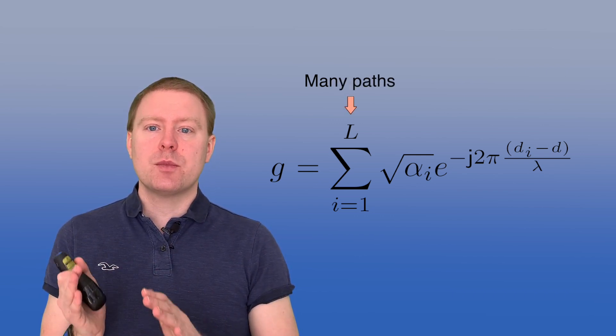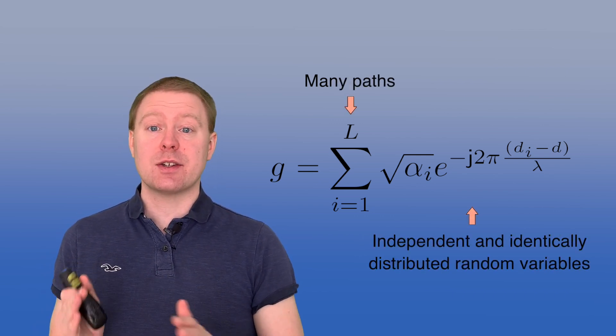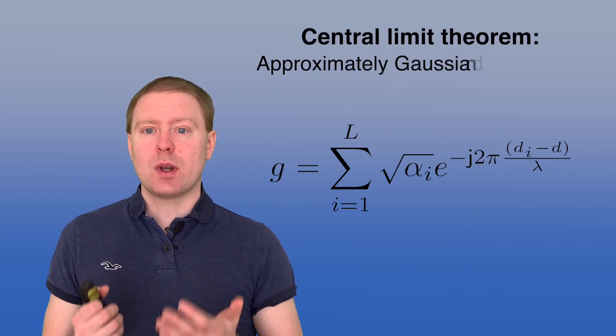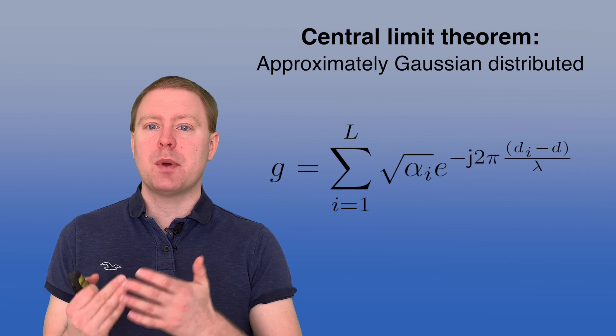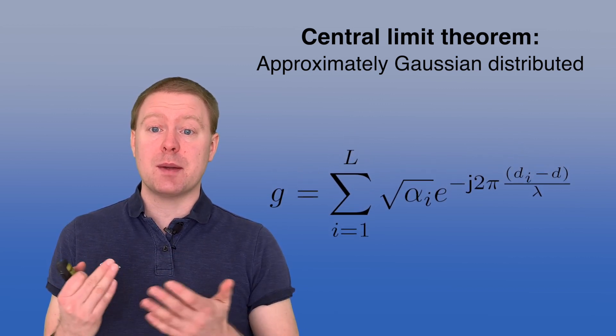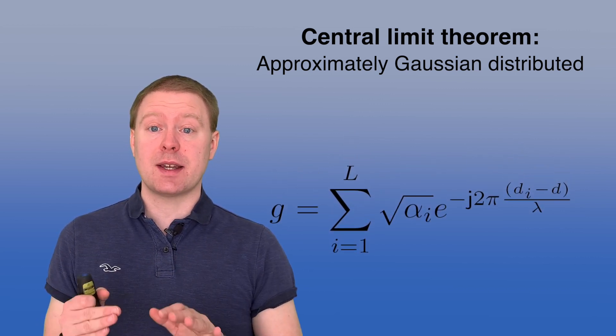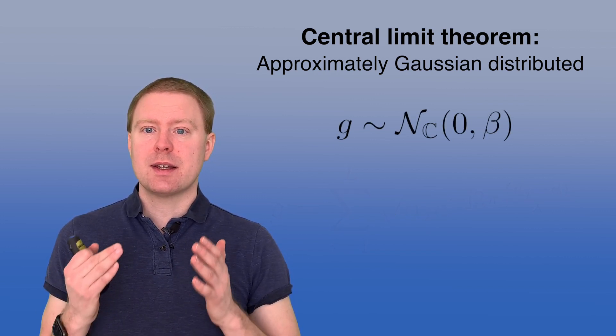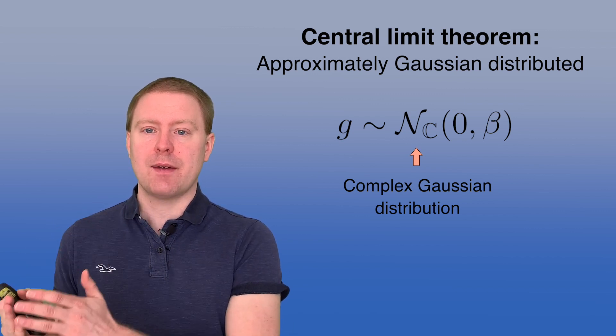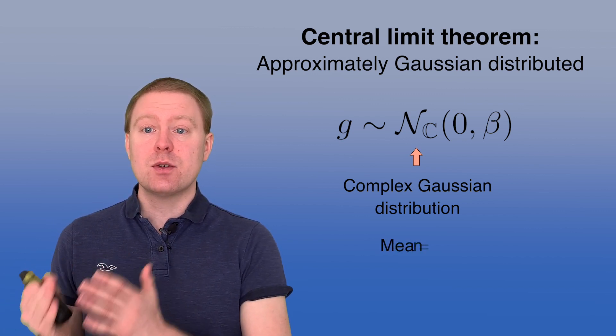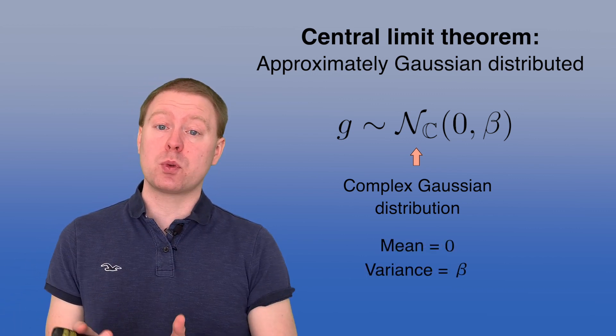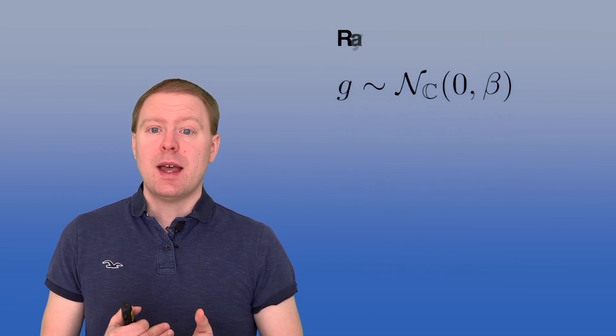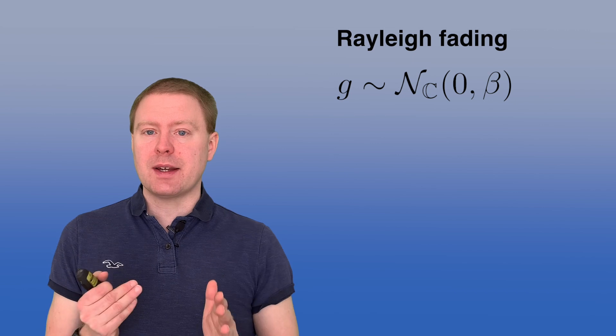And all of them, you can view them as independent and identically distributed from some kind of distribution. And then the central limit theorem says that when you add up a lot of random variables that are independent, then you get something that is roughly Gaussian distributed. And G is now complex Gaussian, because of the phase shifts, and it has zero mean, and has a variance that we will call β to be consistent with previous videos.